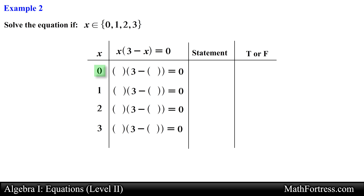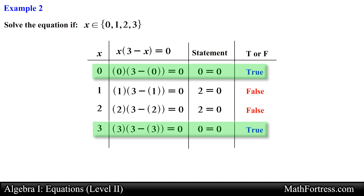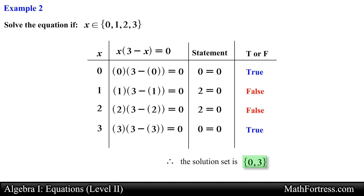The first element is 0, so substituting that into the equation yields the statement 0 is equal to 0, which is true. The second element 1 yields the statement 2 is equal to 0, which is false. The third element 2 also yields 2 is equal to 0, which is false. Lastly, element 3 yields 0 is equal to 0, which is true. Therefore the solution set is {0, 3}.